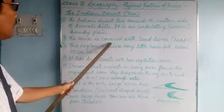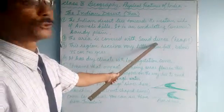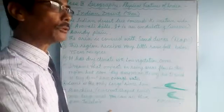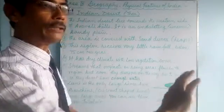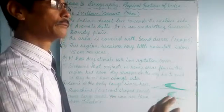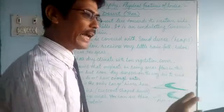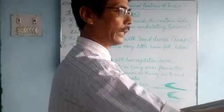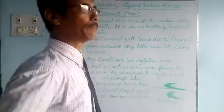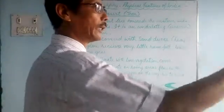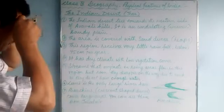The area is covered with sand dunes. Dunes means heaps — very high heaps of sand, that's called sand dunes. They form because of the wind. When the wind blows very strongly, it blows the sand from one area to another. Because the sand is heavier, it cannot be blown far away, so sand dunes keep moving because of the wind.